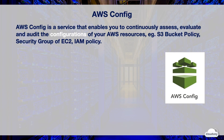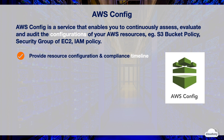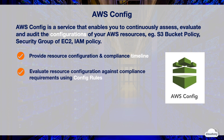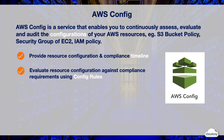AWS Config is a service that enables you to continuously assess, evaluate and audit the configurations of the AWS resources, such as S3 bucket policy, Security Group of EC2 and IAM policy. AWS Config records AWS resource configuration and compliance history, and provides a timeline view of configuration details. AWS Config lets you evaluate resource configuration against compliance requirements by creating config rules.